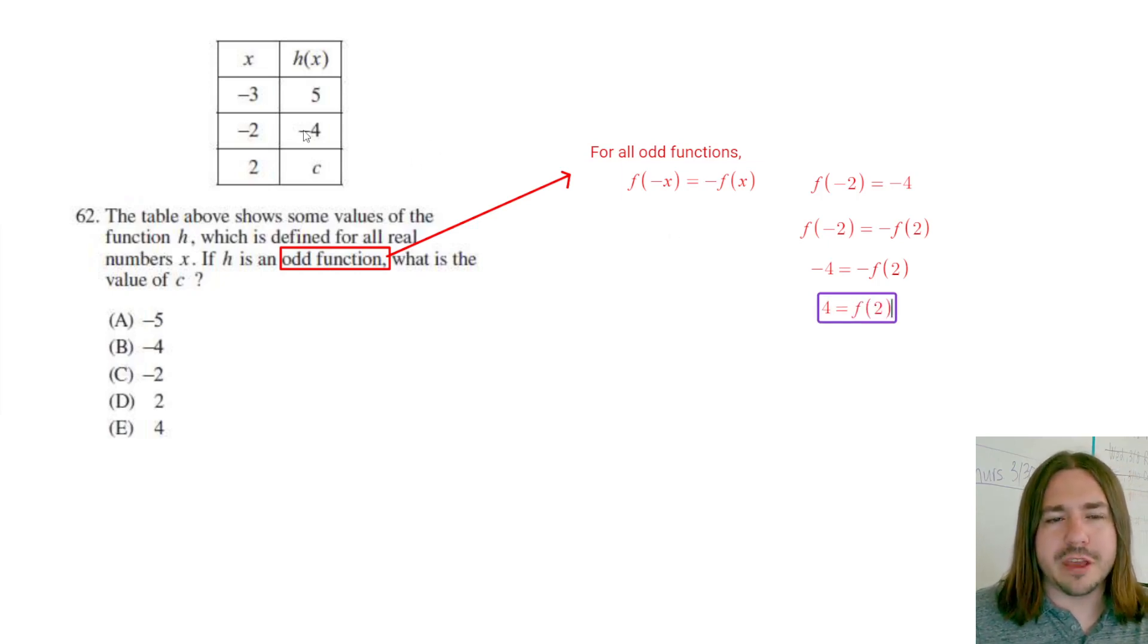Another way of thinking about it: for an odd function, whatever value the function takes on for any given x value, for the opposite x value - like the opposite of 5 is -5 - we can find the function value by negating the y value.